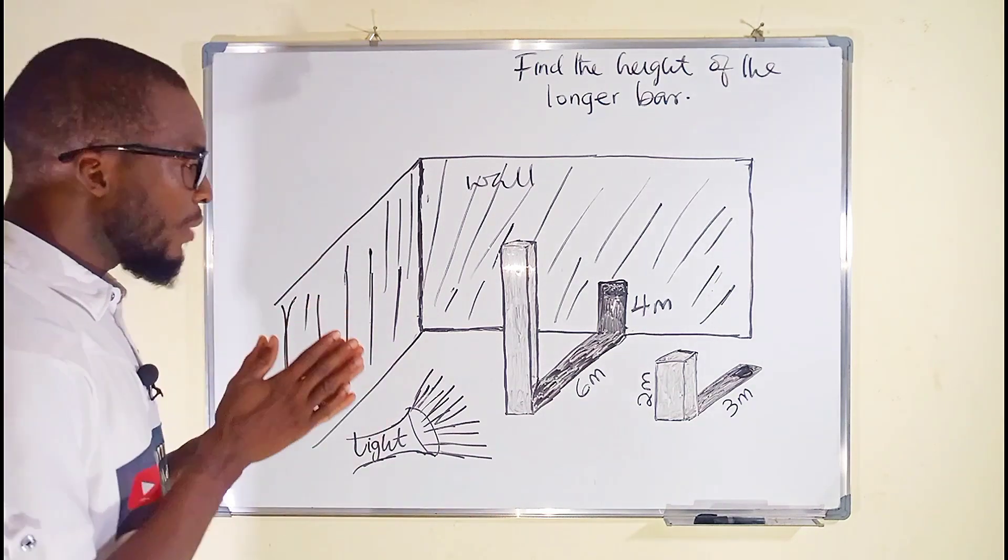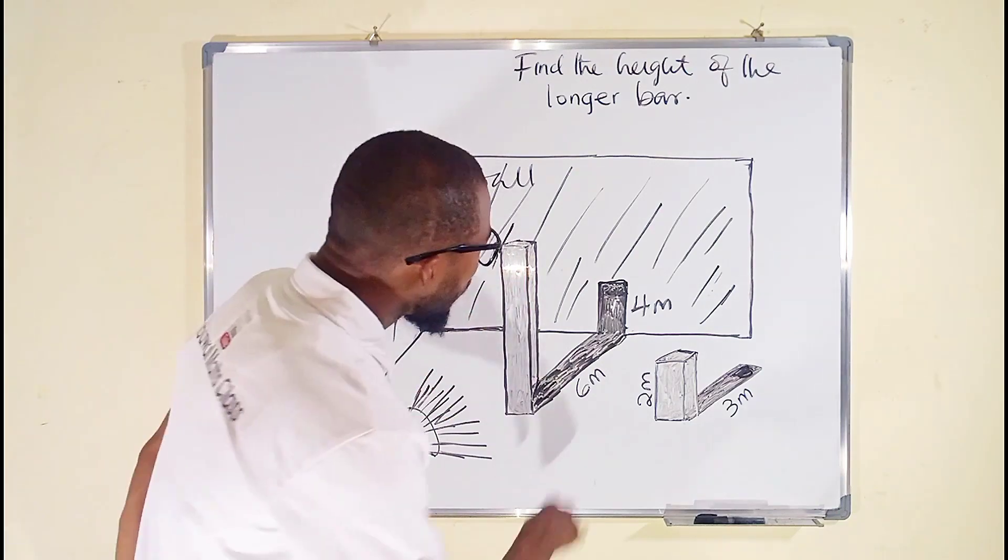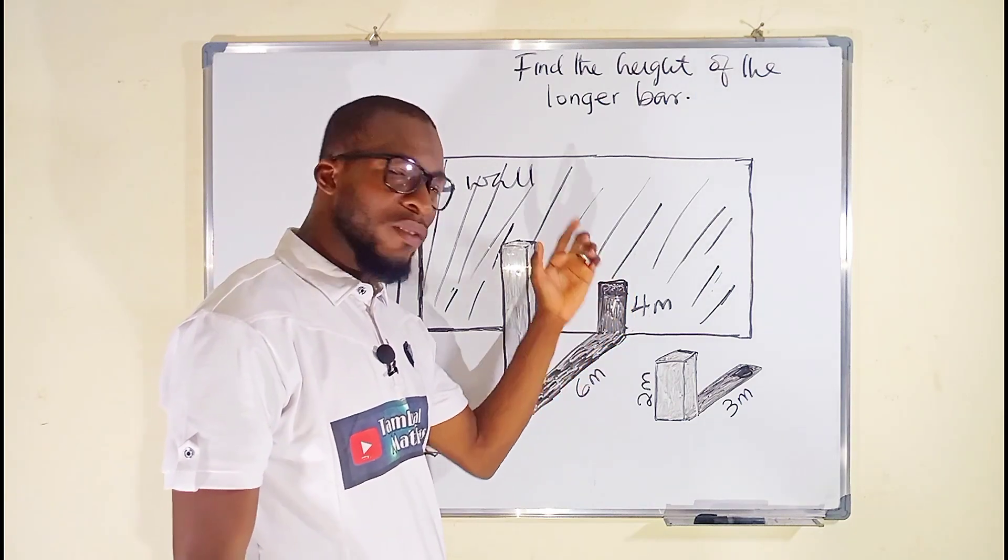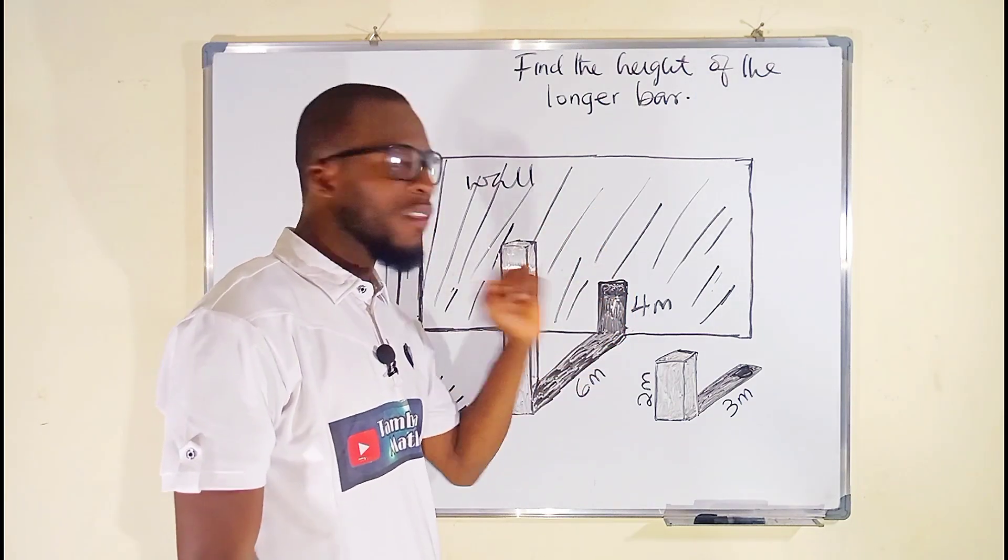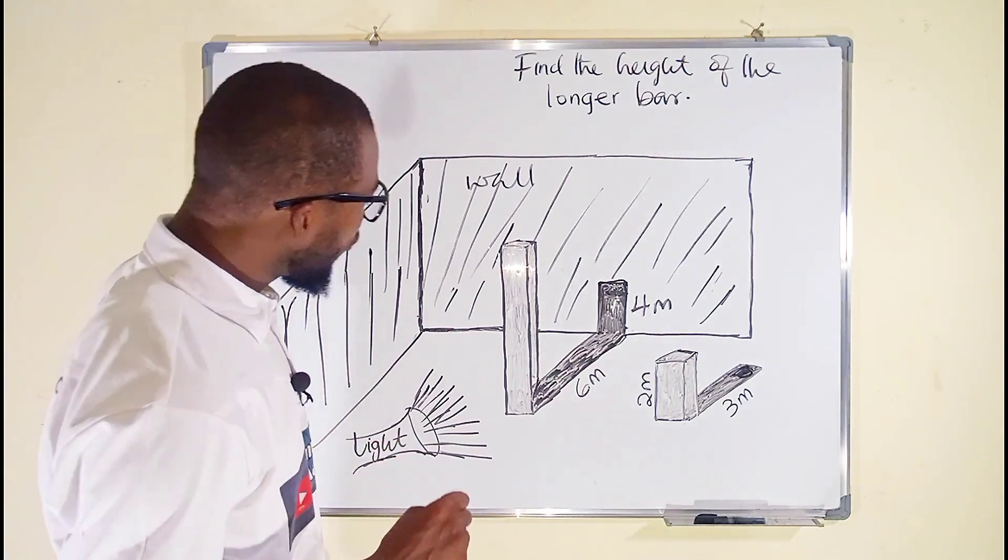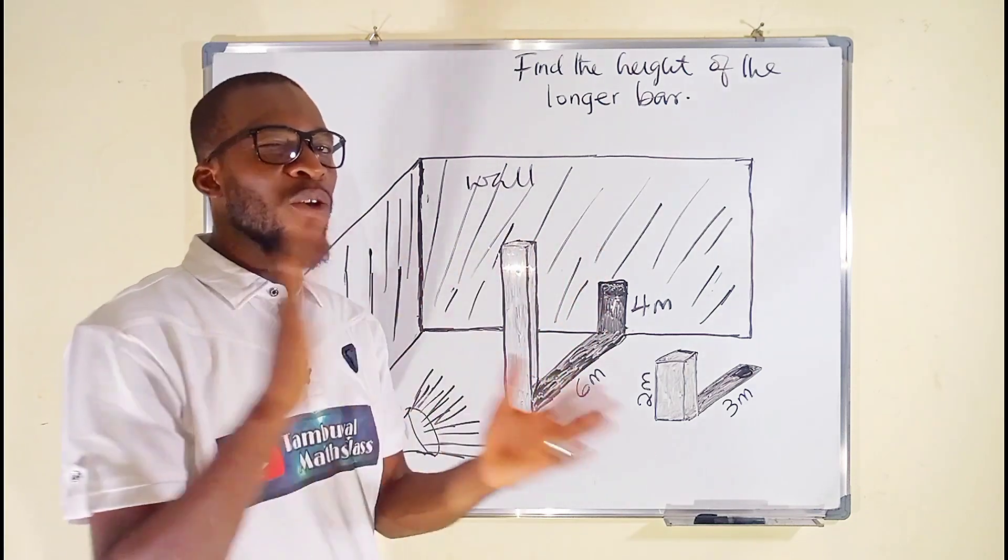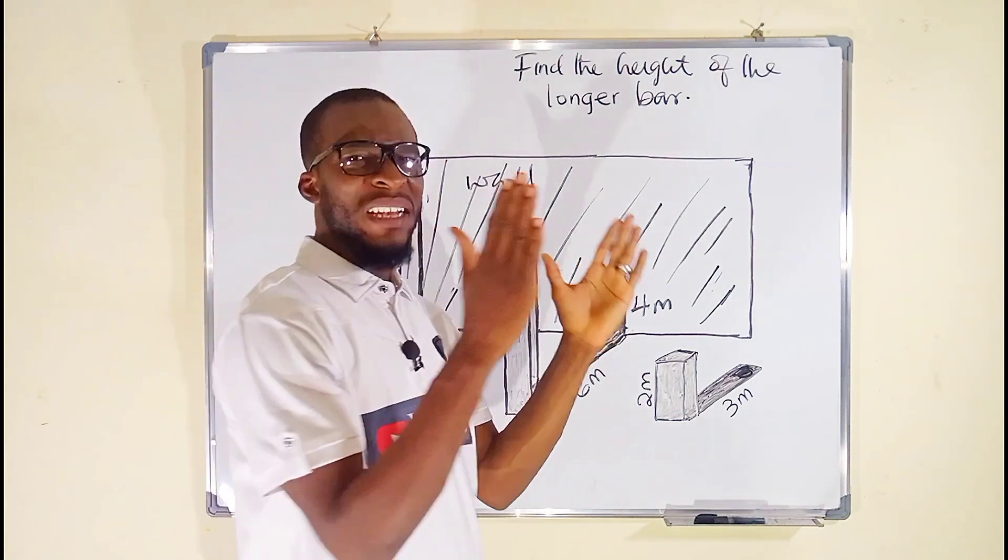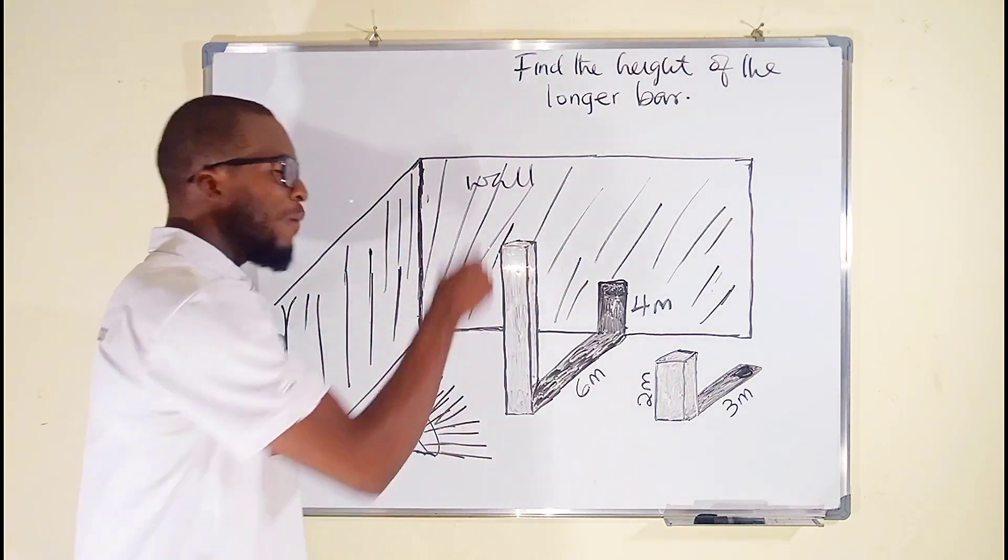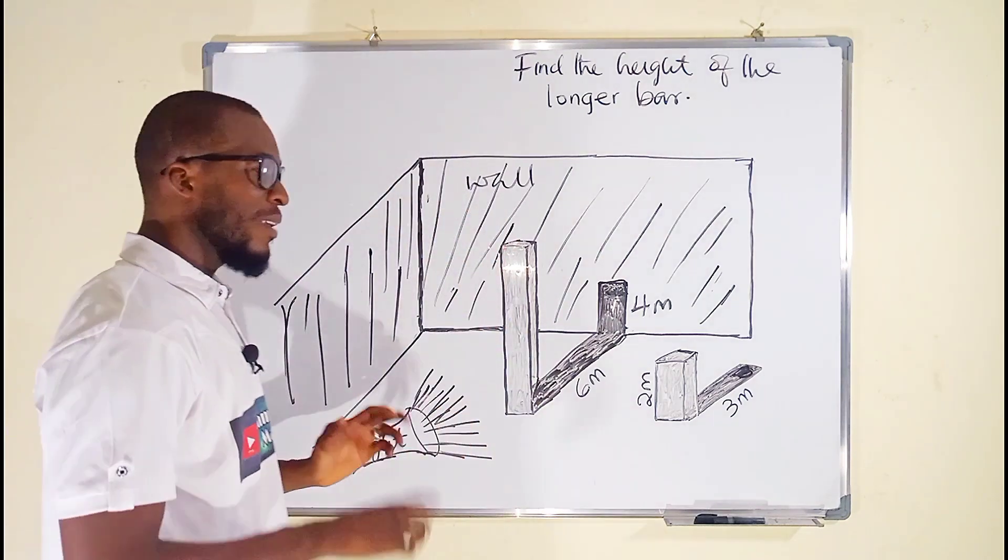So before we start applying these similar shapes, I would like to let you know that suppose this vertical wall is absent, this extra four meter shadow casted on the wall would have been longer than four meters. That's number one condition you should know. Number two, suppose this bar is to be taken closer and closer to the wall, even should be attached, the shadow of this bar will be exactly equal to the height of the bar.